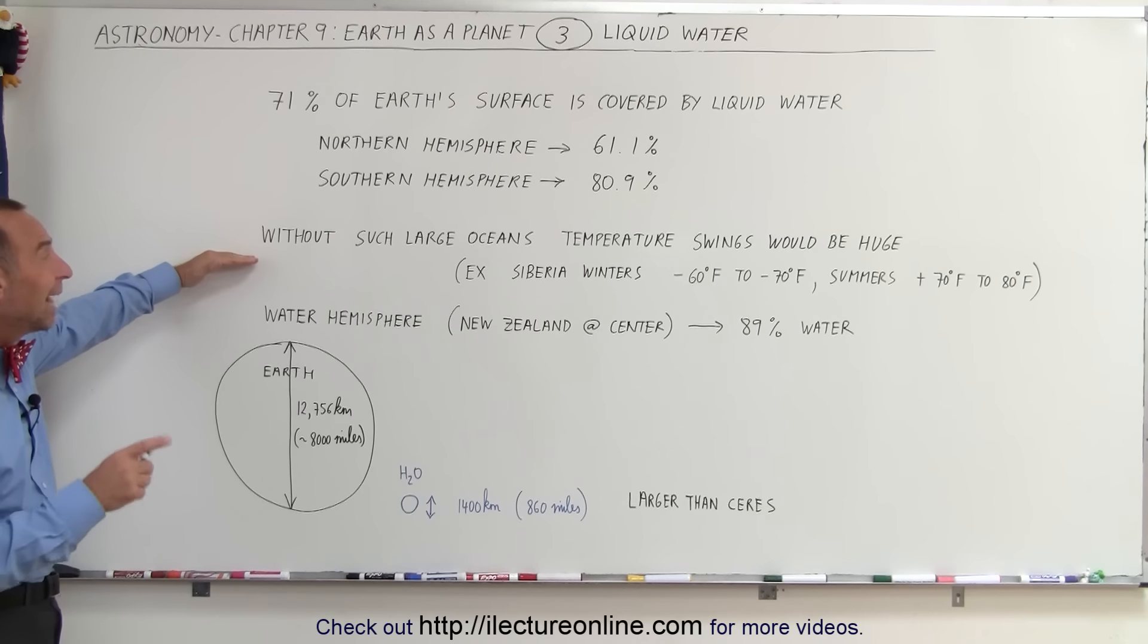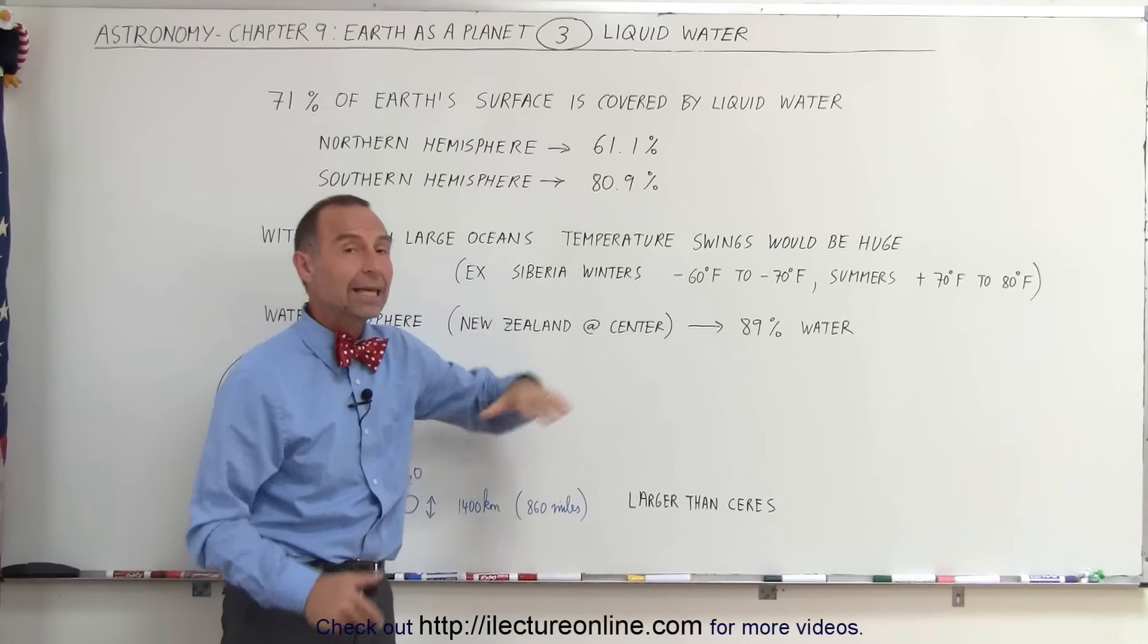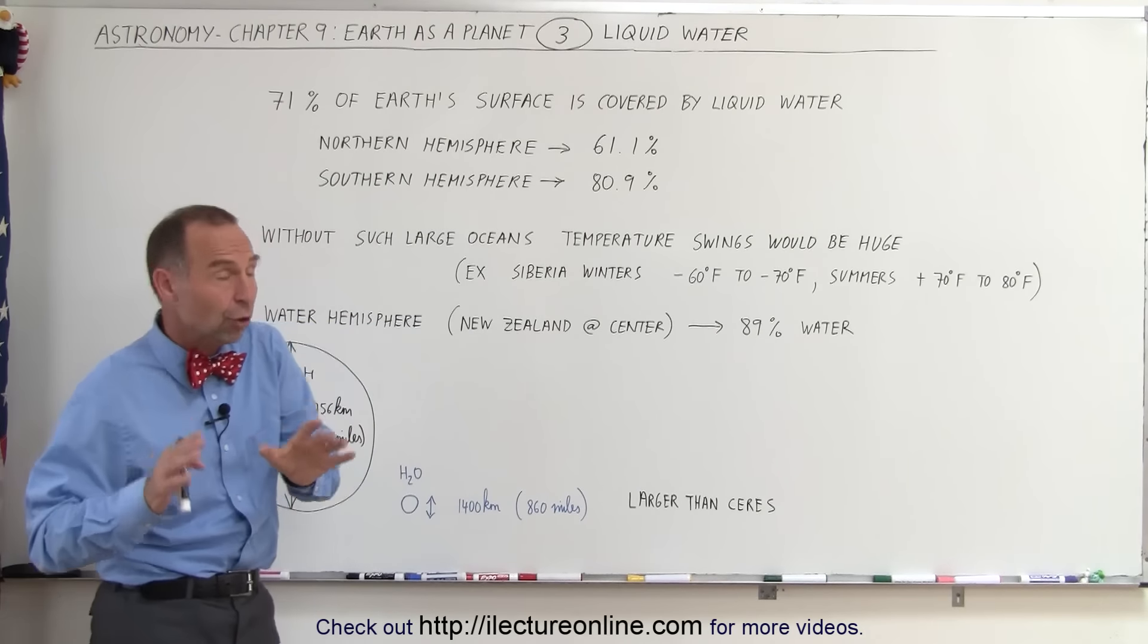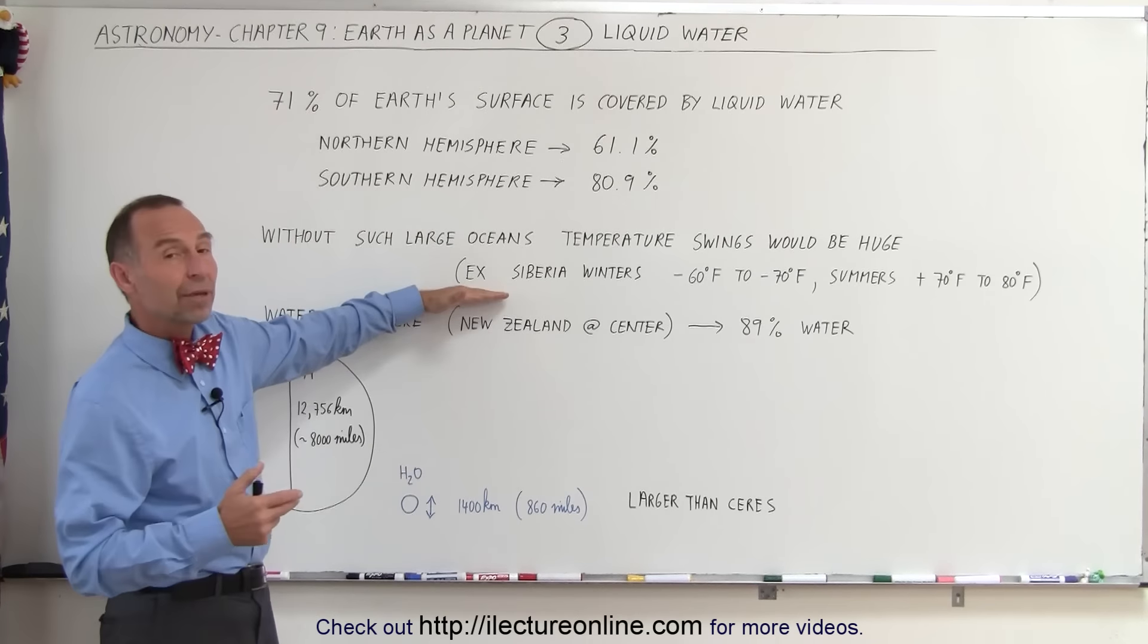What would happen if it didn't have such large oceans covering much of the Earth's surface? The temperature swings would absolutely be enormous. As a comparison, even though most of the Earth is covered with water, take a look at Siberia.